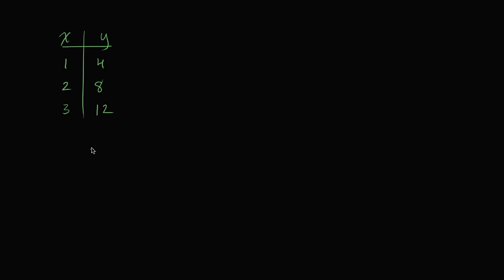You might immediately recognize that this is a proportional relationship. In order for it to be a proportional relationship, the ratio between the two variables is always constant. If I look at y over x here: four over one is four, eight over two is four, twelve over three is four. Y over x is always equal to four.